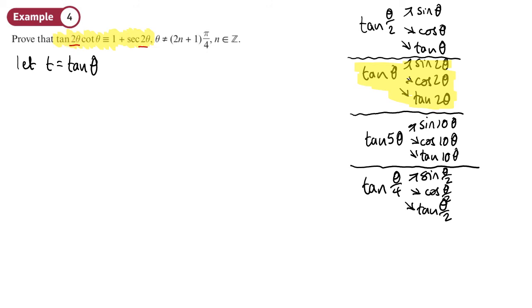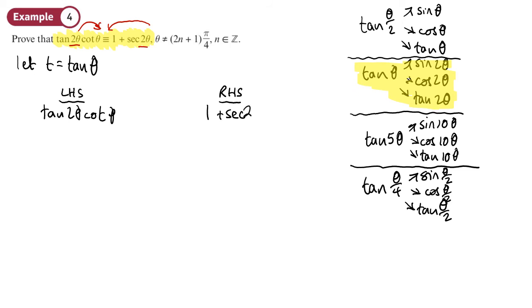So I'm actually going to work my way to the middle — start from both expressions and see if I can get to a common expression that shows they're equal. I'll work on the left hand side here and the right hand side here. One important note: you must not start with the whole identity and rearrange it, as that assumes it's true. You must start with one side and reach the other, or start from both sides and meet in the middle. You cannot assume the identity is true when trying to prove it.